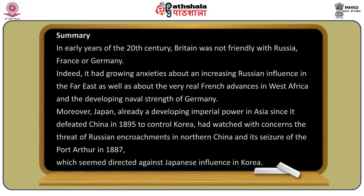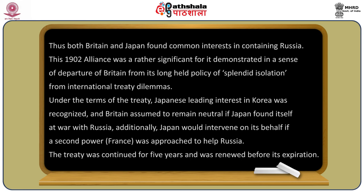In summary, in the early years of the 20th century, Britain was not friendly with Russia, France, or Germany, and had growing anxieties about increasing Russian influence in the Far East, French advances in West Africa, and the developing naval strength of Germany. Japan, already a developing imperial power since defeating China in 1895, had watched with concern the threat of Russian encroachments in northern China and its seizure of Port Arthur. Both Britain and Japan found common interest in containing Russian expansion. The 1902 alliance was significant as it marked a departure from Britain's long-held policy of splendid isolation from international treaty obligations.